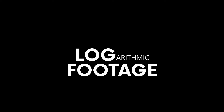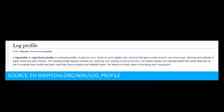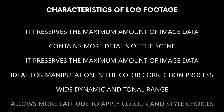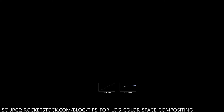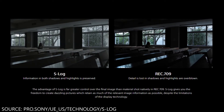First and foremost, what is log and why use it? Log footage is flat footage that contains more details of the scene. It preserves the maximum amount of image data for manipulation during the color correction process. If you have a high contrasted image and want to lower the contrast, you have no information in your image to do it. But with a log image, you can increase and decrease the contrast without losing quality. Log footage is great for flexibility in workflow and for making high quality adjustments. This is not a format intended for visualization but for post-processing.